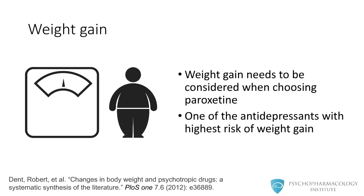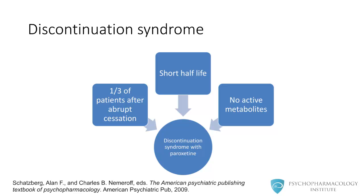Weight gain also needs to be considered as a possibility when prescribing paroxetine. In a recent review, paroxetine was identified as one of the antidepressants with the highest risk of producing weight gain. The other potential problem is the possibility of a discontinuation syndrome. Although this syndrome can appear with most antidepressants, it can be more problematic with paroxetine. Around one-third of patients who stop the drug abruptly can develop a discontinuation syndrome, possibly due to paroxetine's short half-life and lack of active metabolites.